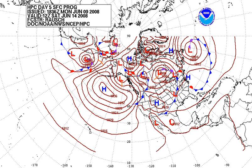The mean sea level pressure is the average atmospheric pressure at mean sea level. This is the atmospheric pressure normally given in weather reports on radio, television, newspapers, or on the internet. When barometers in the home are set to match the local weather reports, they measure pressure adjusted to sea level, not the actual local atmospheric pressure. The altimeter setting in aviation is an atmospheric pressure adjustment. Average sea level pressure is 1013.25 mb (101.325 kPa), 29.921 inHg, or 760.00 mmHg.